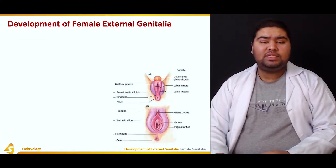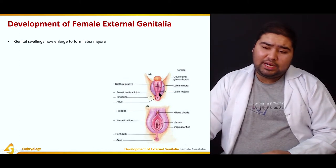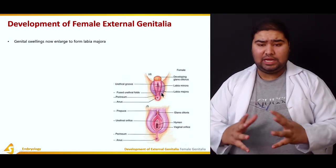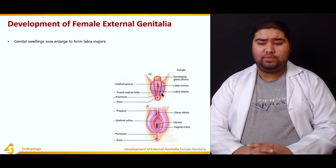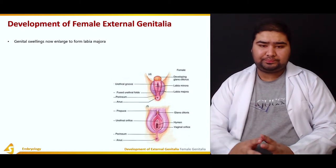The genital swellings now enlarge to form the labia majora. These — shown in purple — are the urethral genital swellings; they enlarge and form the labia majora.